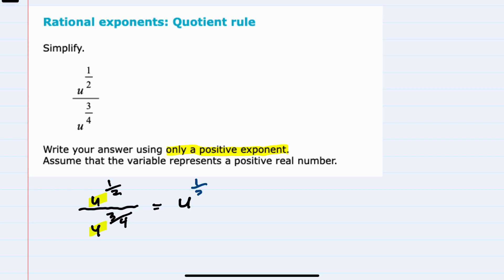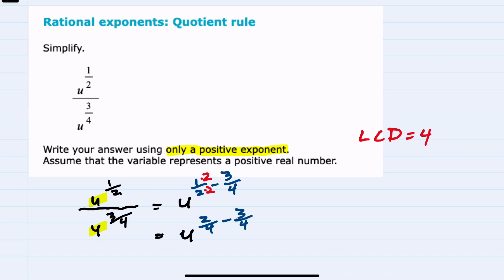So we would have the exponent in the top, one-half, minus the exponent of the bottom, three-fourths. To complete this subtraction we need to get a common denominator between the two and the four. Our lowest common denominator is four, so I only need to modify the first expression by multiplying that denominator by two, meaning I also multiply the numerator by two. That gives us two-fourths minus three-fourths as the exponent.